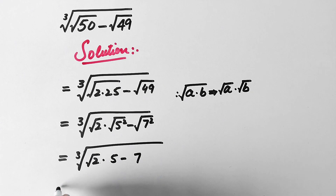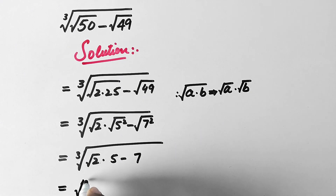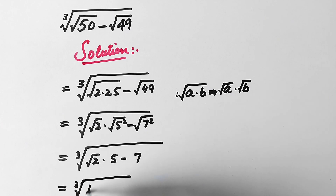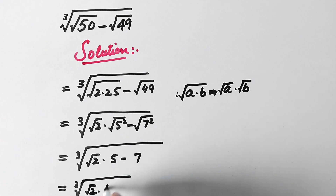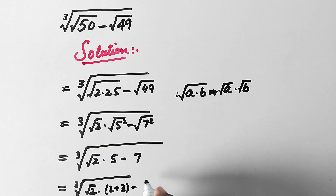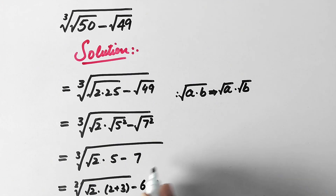And in the next step we can write: cube root of square root 2 times, where we write this 5 as 2 plus 3, minus 7. This is the same as minus 6 minus 1.